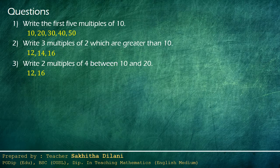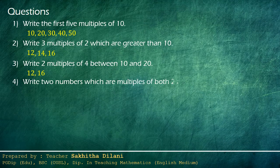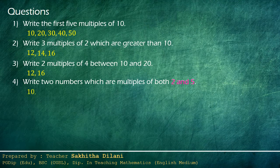Fourth one: write two numbers which are multiples of both two and five. You have to write numbers that appear in the multiples of two and also the multiples of five. They are ten and twenty.